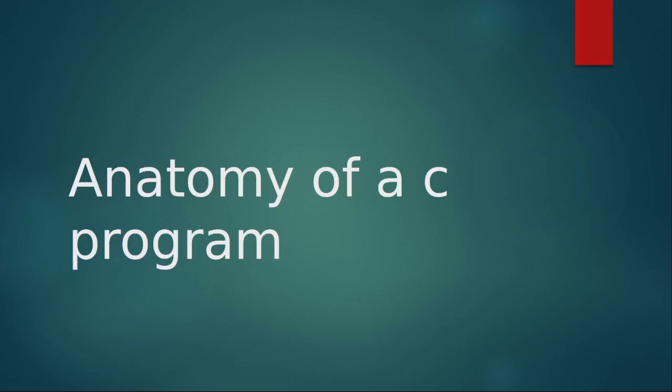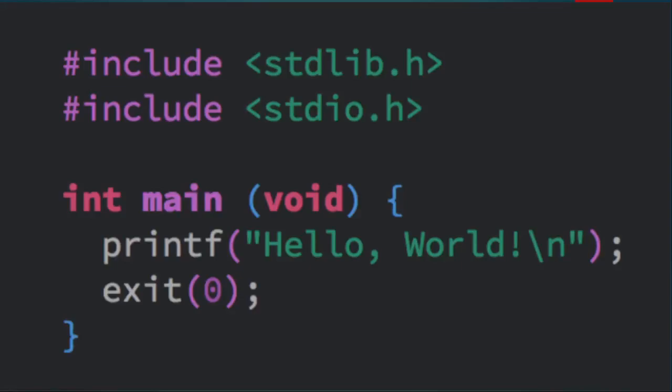So, we started our learning on C programming language. We've looked at introduction, we've looked at how to set a system for C programming, and then we started a discussion on the anatomy of C programming. If you were not part of the first part of this teaching, I would like you to please revert to the older video in this playlist so that you could understand what we've spoken about so far.